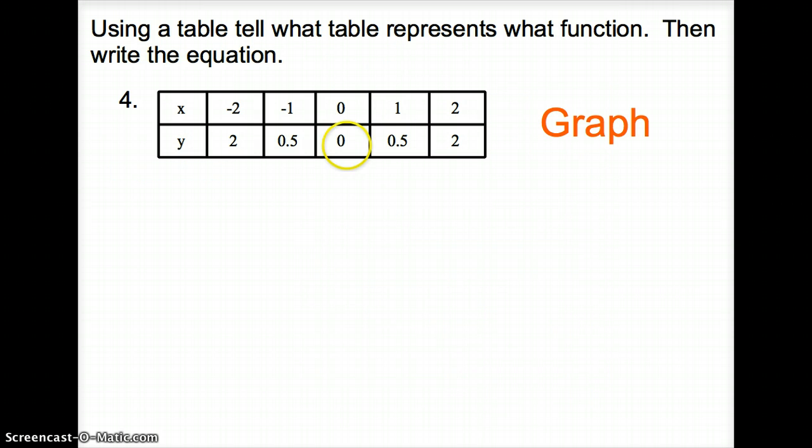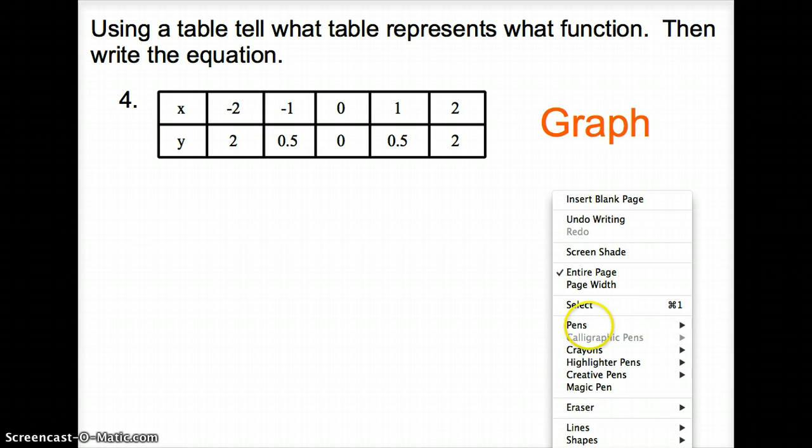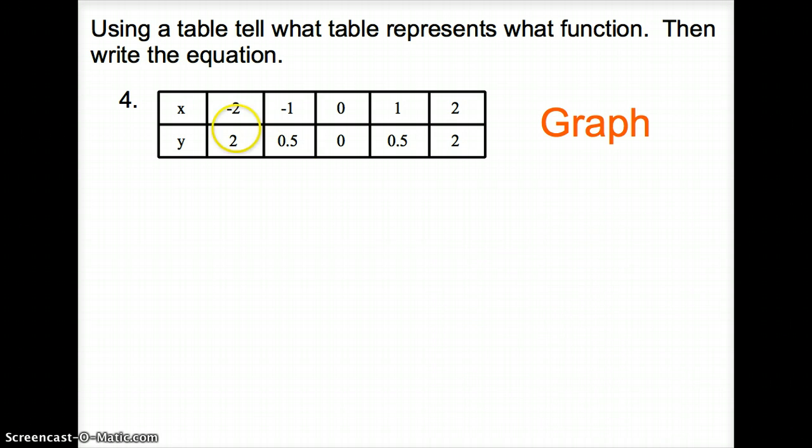Now, what happens if we're asked to use the table to tell us what kind of function it is? We're not graphing anymore. We're not graphing the function. So, let's take a peek at our tables. Start with your x-values. Does your x-values in your table increase consistently? We go negative 2 to negative 1 to 0. Yes, they increase consistently. It's adding 1 each time. So that's very important in step 1. They add 1 each time.